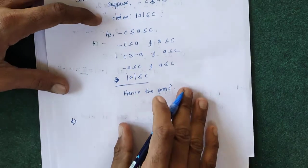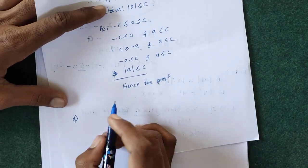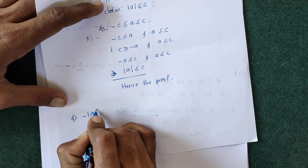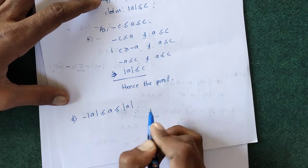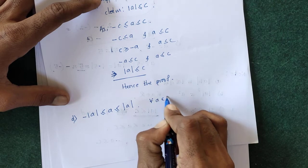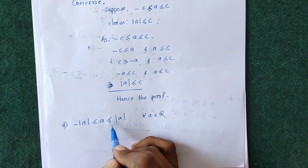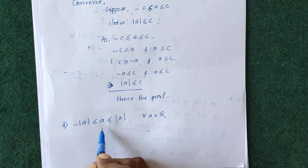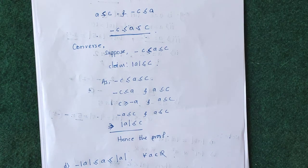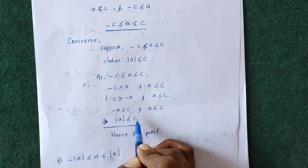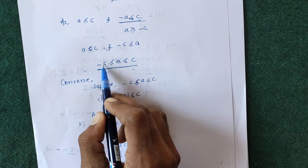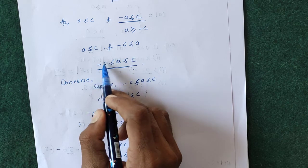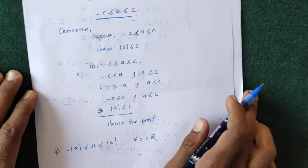The fourth property is: minus of mod a is less than or equal to a, which is less than or equal to mod a, for all a belonging to the real numbers. To prove this, just take c equals mod a in the third property. Then we get −mod a ≤ a ≤ mod a. Hence the proof of the last property.